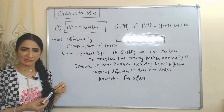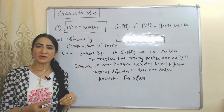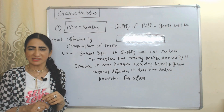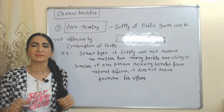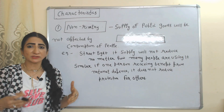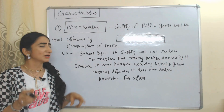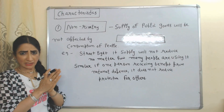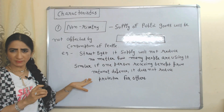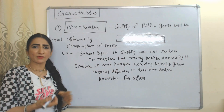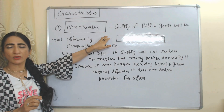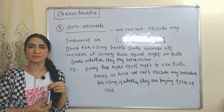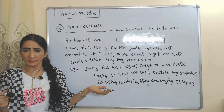Now the characteristics of public goods. First: non-rivalry. Non-rivalry means the supply of public goods will not be affected by the consumption of people — no matter how many people are using it. For example, the supply of street light will not reduce no matter how many people use it. Similarly, if one person receives benefit from national defense, it doesn't reduce protection for others.